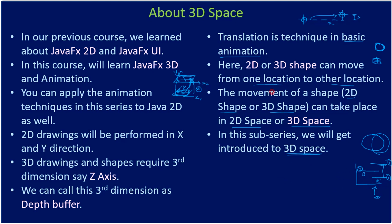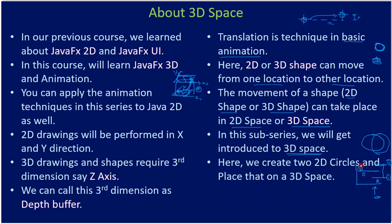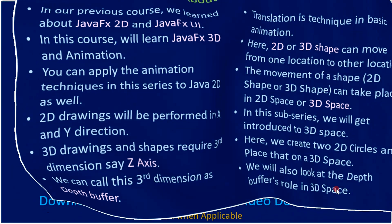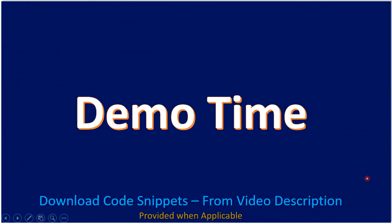We are using 3D space but 2D shapes in this video. From the next video onwards we will use 3D shapes in 3D space. Here we create two 2D circles, place them in 3D space, and explore the depth buffer role. The depth buffer determines which object is near you and which is far away — a disc far away and behind another disc will be hidden by the closer disc. That is what is called a depth buffer. Thank you for watching, bye.